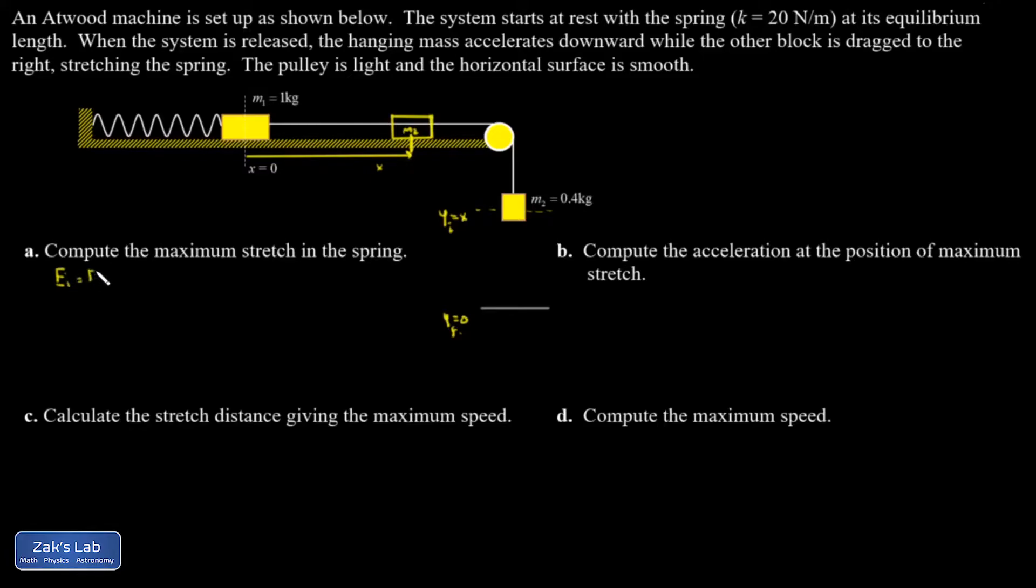E initial equals e final. In my initial state, I have no spring potential energy. I have no kinetic energy. The only thing with energy is the gravitational potential energy of m2. So that's going to be m2gx. In my final state, m2 is now at this low point where it has no gravitational potential energy. So that's gone.